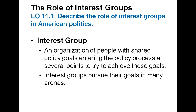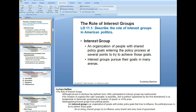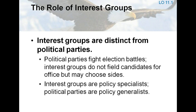An interest group is an organization of people with similar policy goals that tries to influence the political process to achieve those goals. Interest groups try to influence every branch and every level of government. This multiplicity of policy arenas helps distinguish interest groups from political parties. Interest groups may also support candidates for office, but American interest groups do not run their own slate of candidates. Interest groups are often policy specialists, whereas parties are policy generalists. Thus, interest groups do not face the constraint imposed by trying to appeal to everyone, unlike political parties.